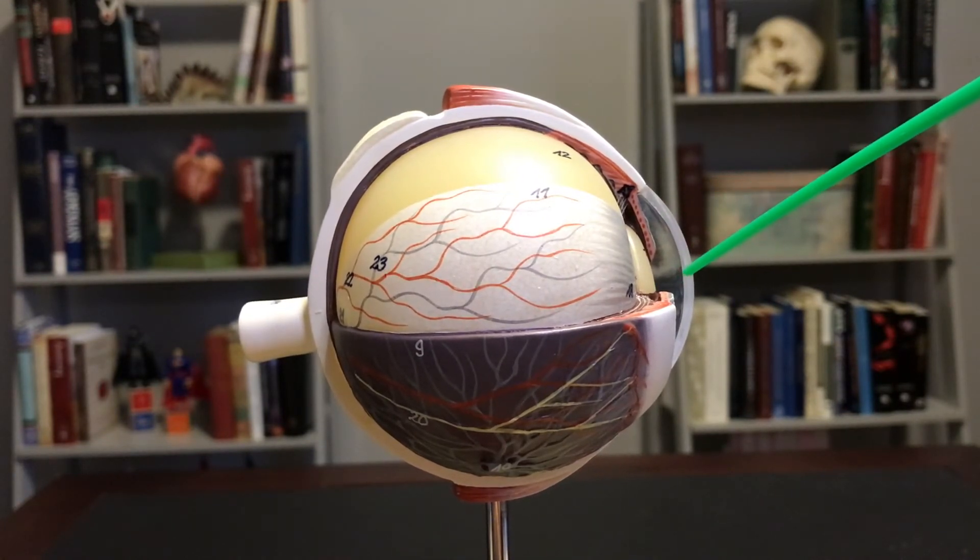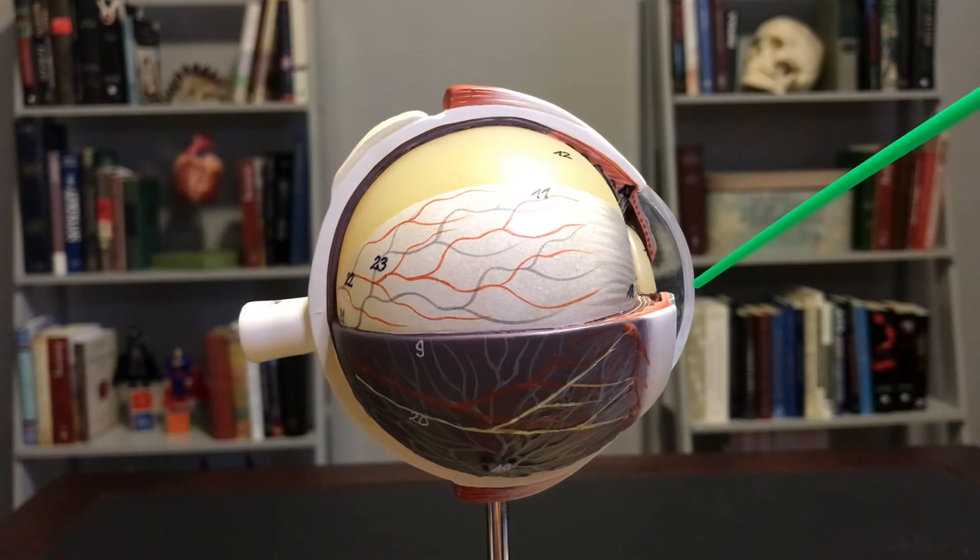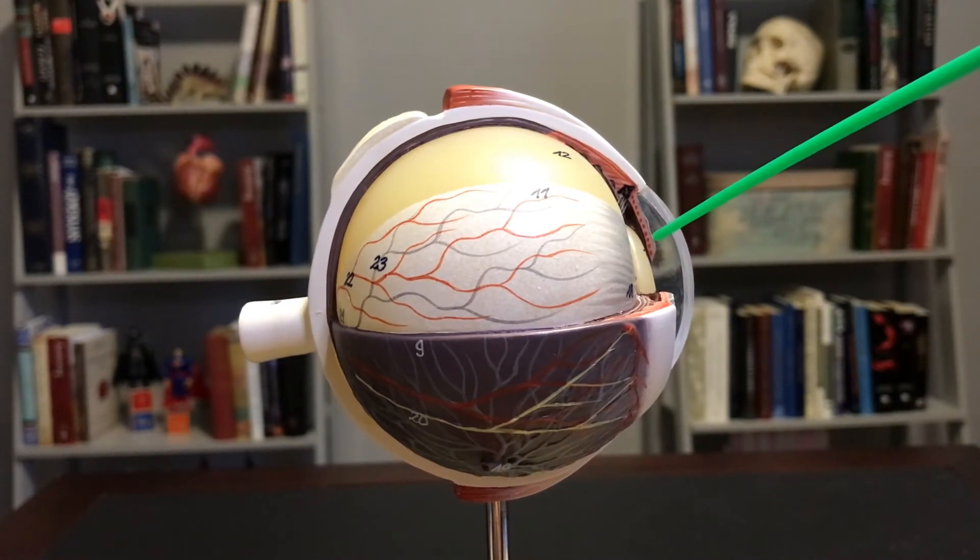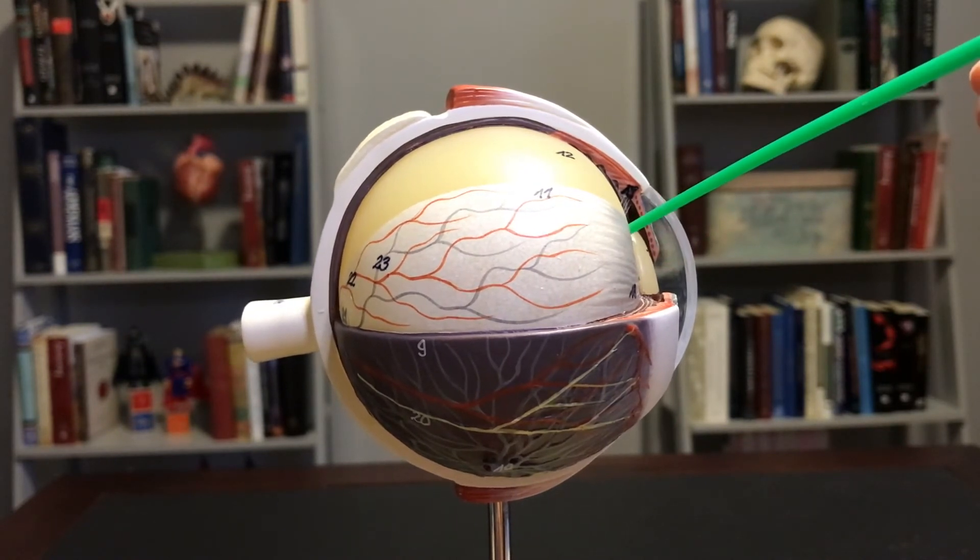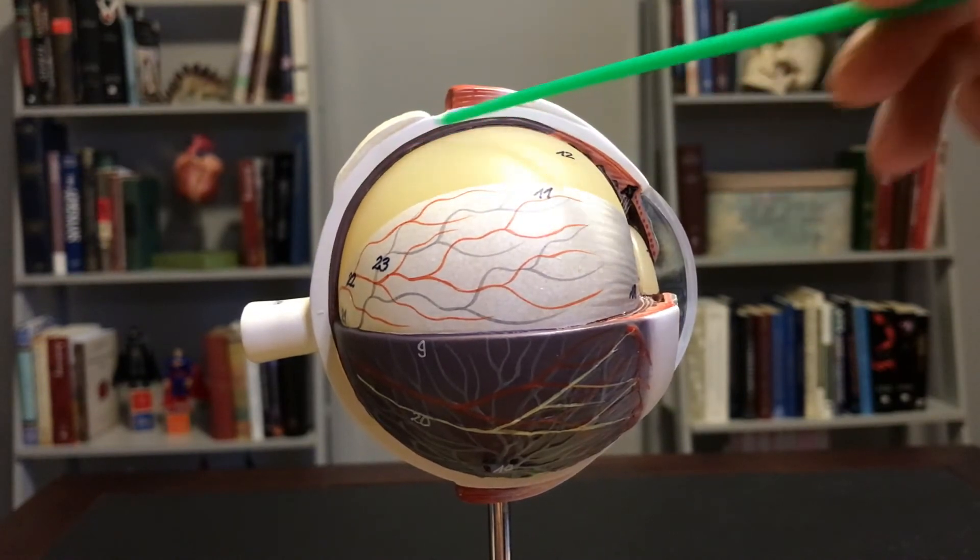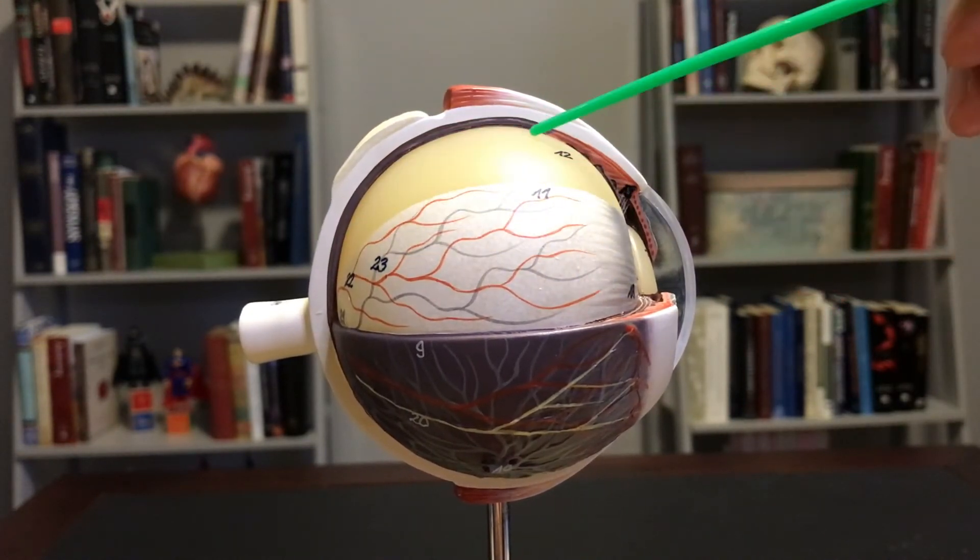There's an anterior chamber that goes from the cornea to the iris. There's a posterior chamber that goes from the iris to the lens. Once we go posterior to the lens, we are now in the posterior segment of the eye. And this takes us all the way to the back.